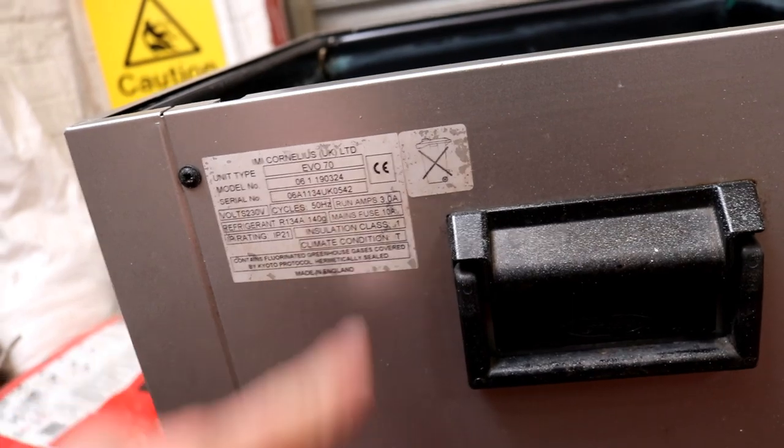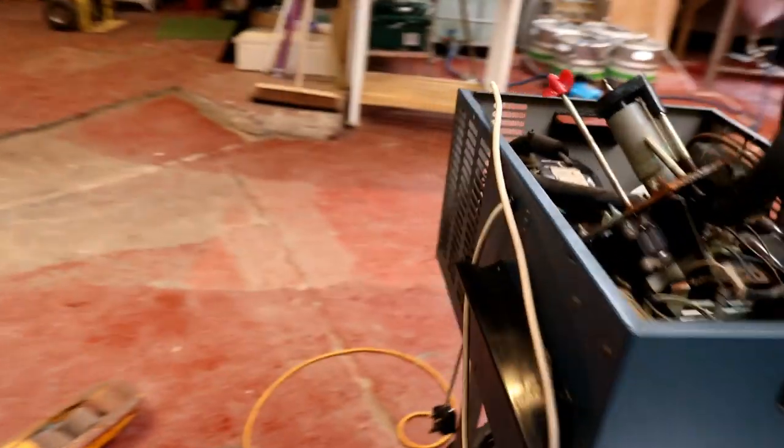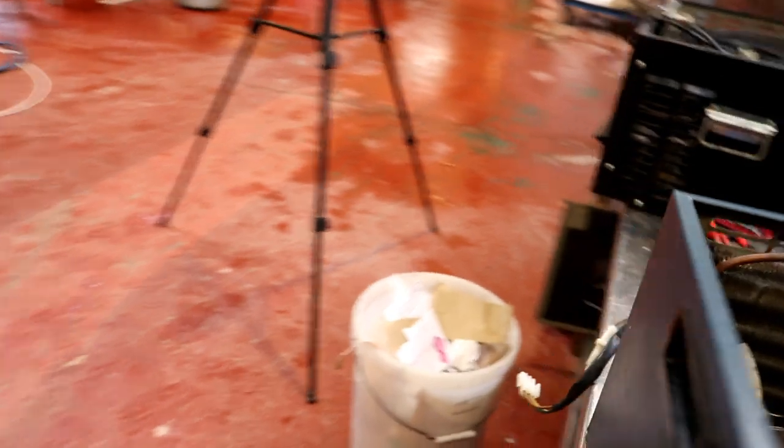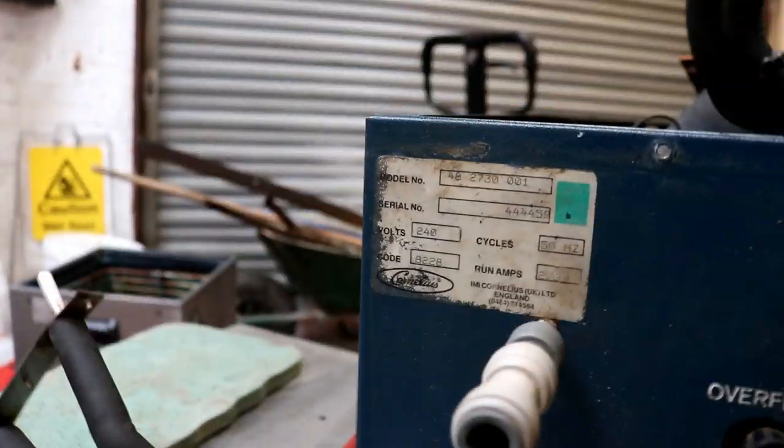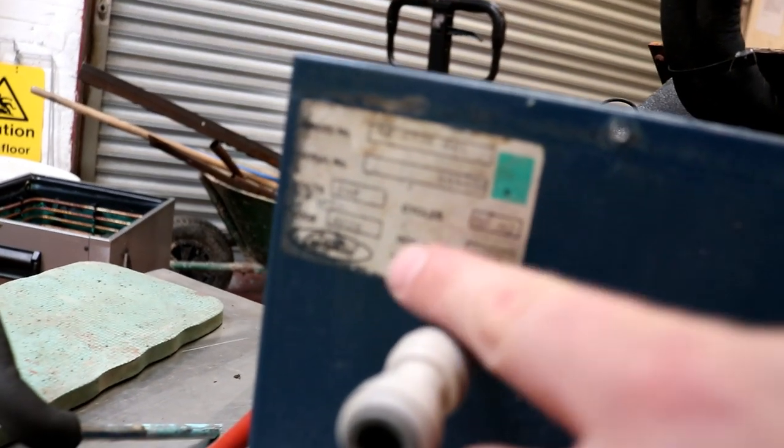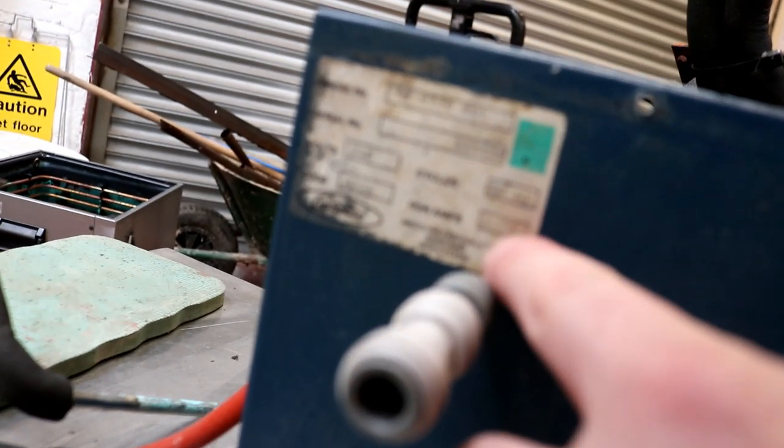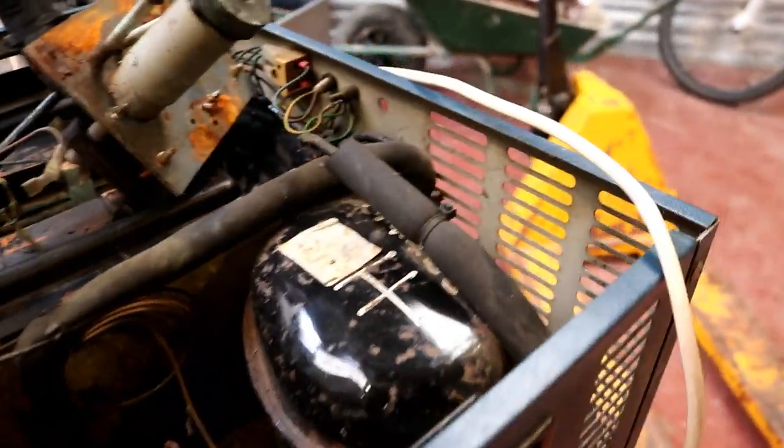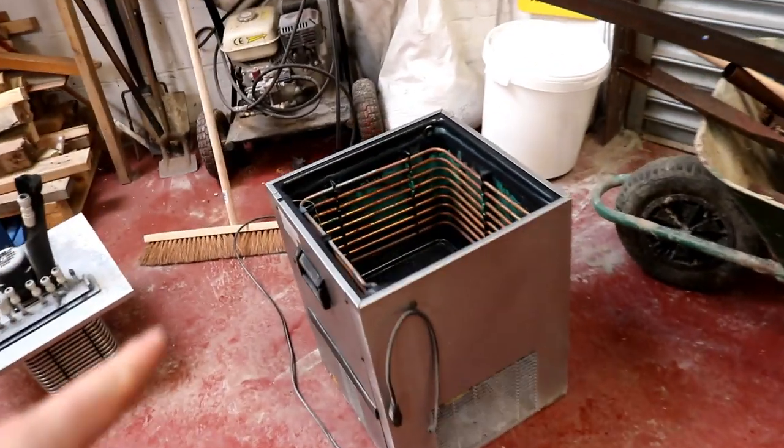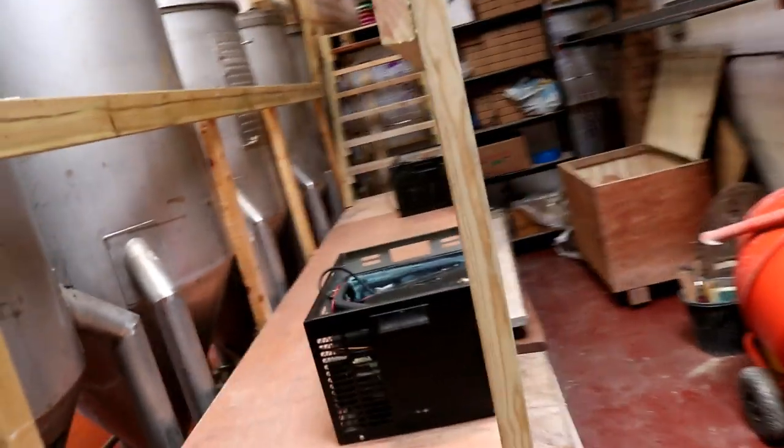There we go, it's an Evo 70. So if that's the case, it's got three amps run, 140 grams of refrigerant in there. Whereas if we have a look at the spec on some of the other units, we've got about two and something amps there. Doesn't quite tell you how much refrigerant's in it, but it's obviously going to be considerably less because it's such a smaller unit.